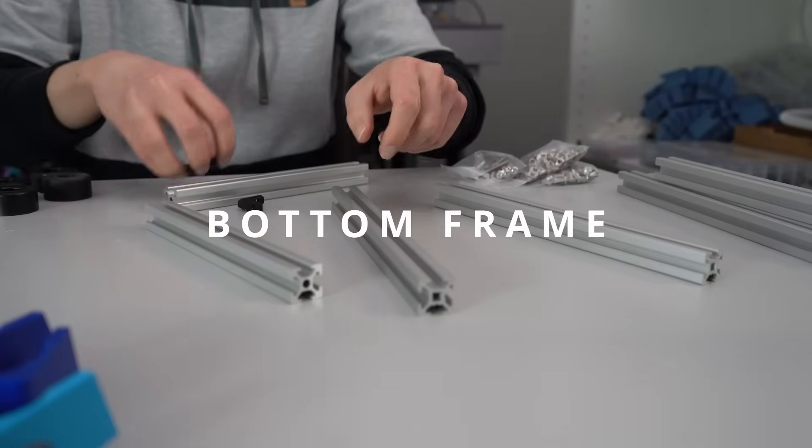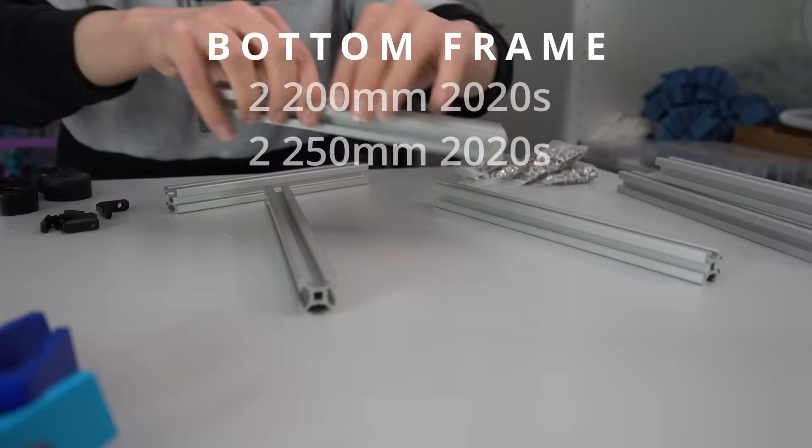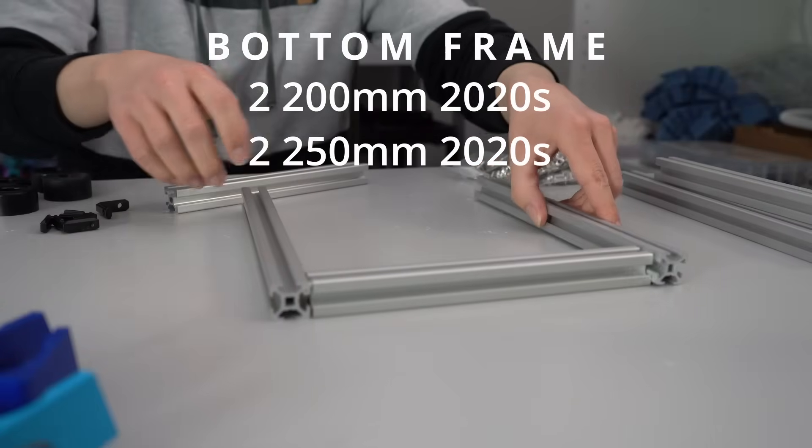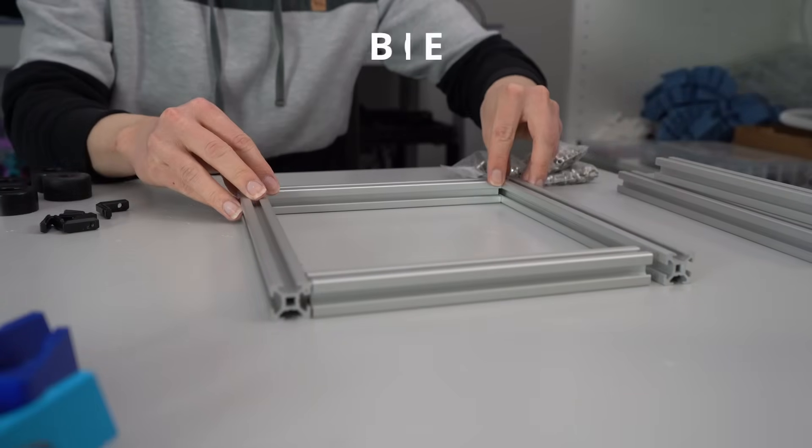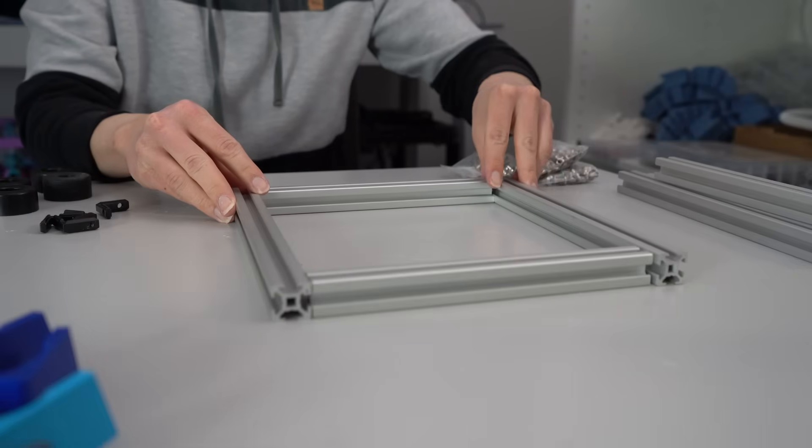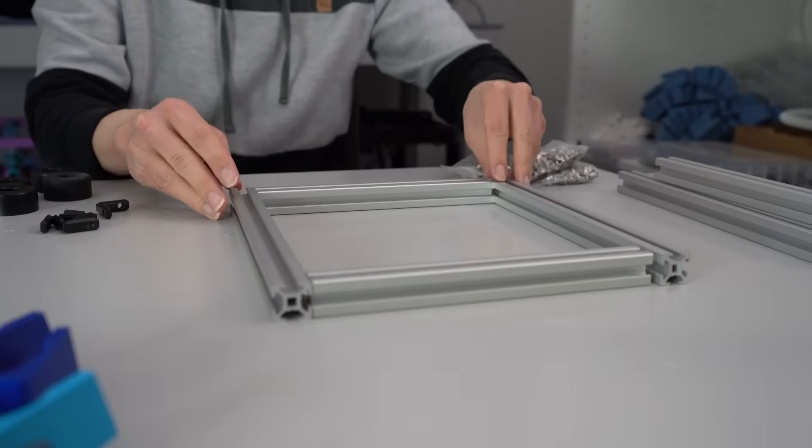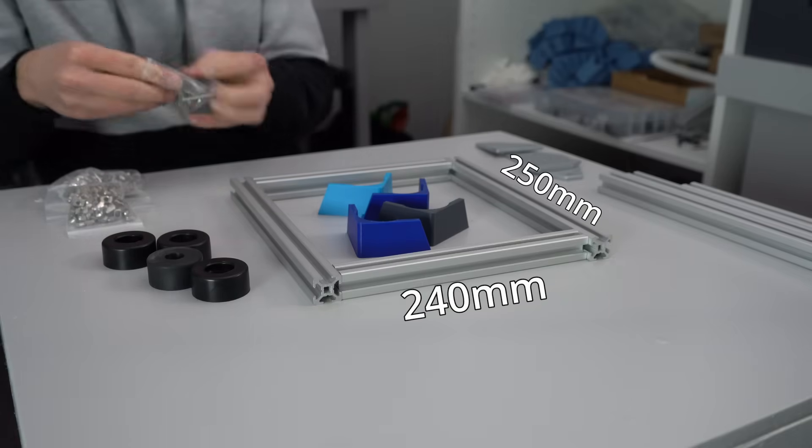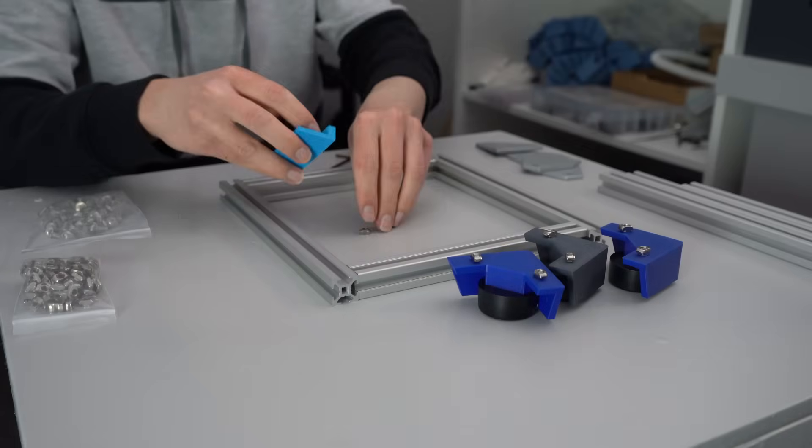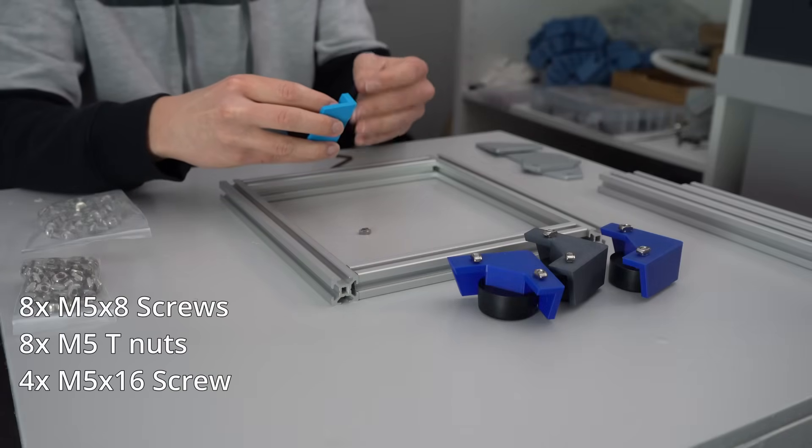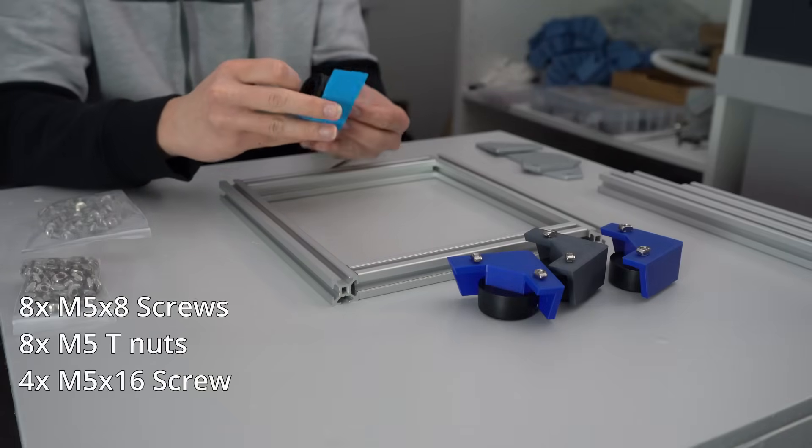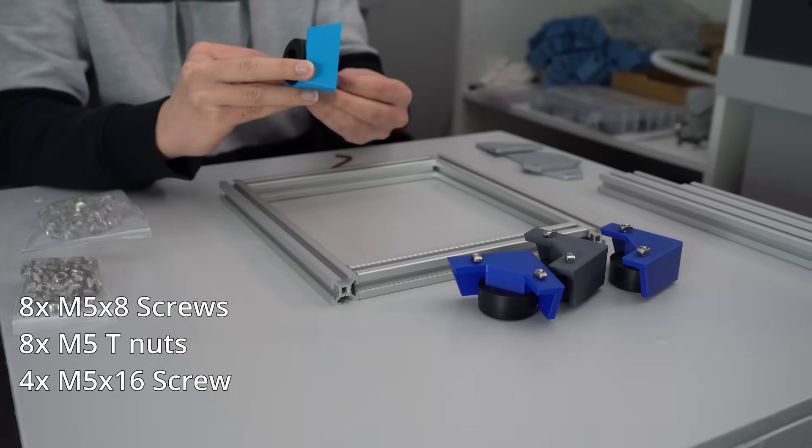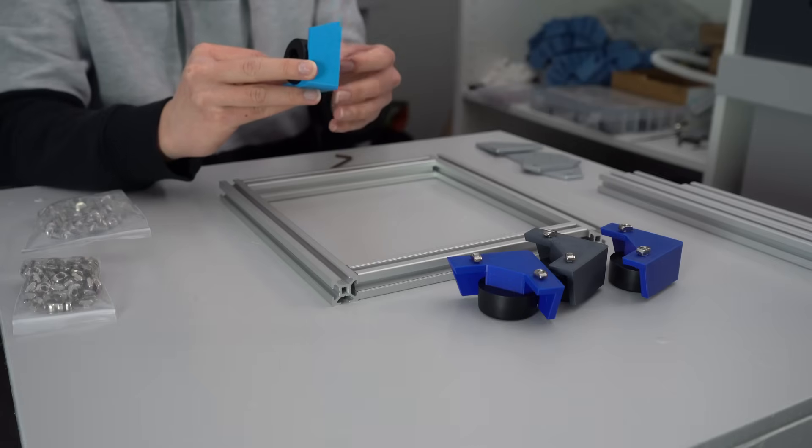We're going to start with the bottom frame, which is built from two 200mm and two 250mm extrusions. The 250mm extrusions go along the Y-axis, and the 200mm extrusions go on the X-axis. So the total footprint of the machine is 240mm by 250mm. The feet attach to the frame with M5x8 screws and T-nuts, and the rubber feet are attached with an M5x16 bolt that cuts its own thread into the printed parts.